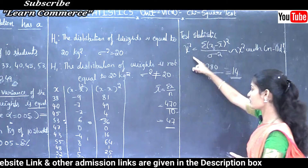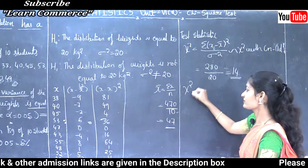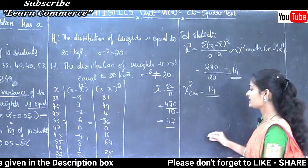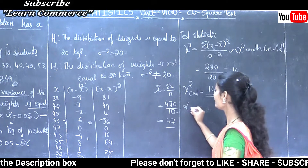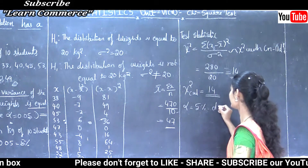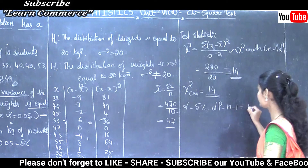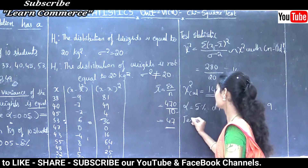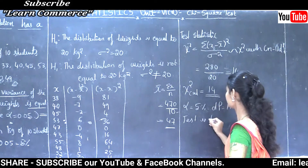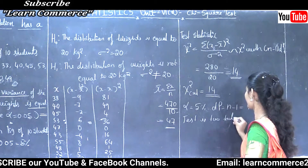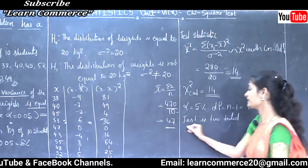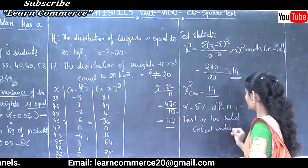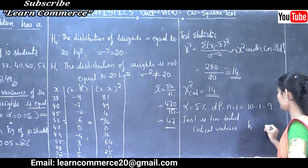Step 4: Alpha is 5% and degrees of freedom = n − 1 = 10 − 1 = 9. Since H1 is not-equal-to type, this is a two-tailed test. Therefore we need to find two critical values, k1 and k2, from the statistical table.